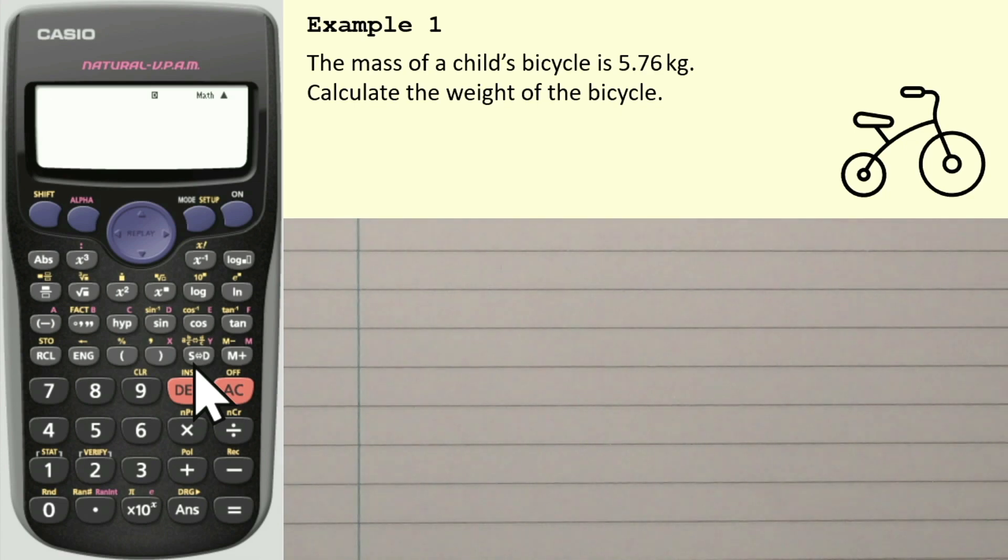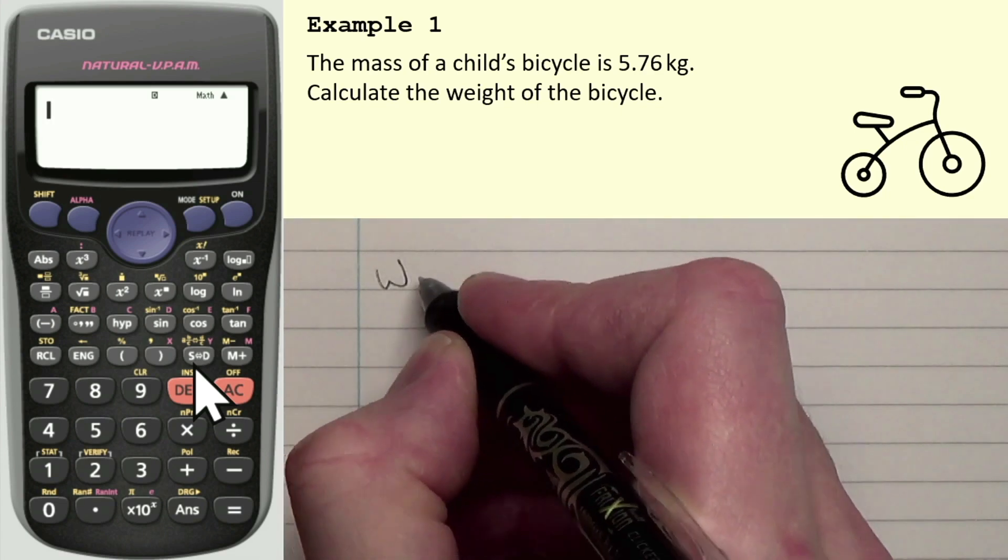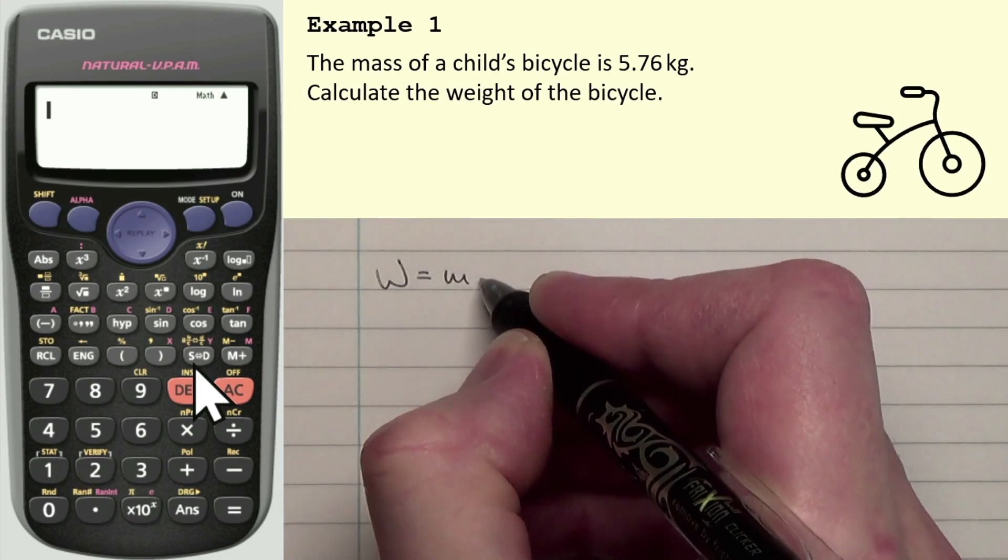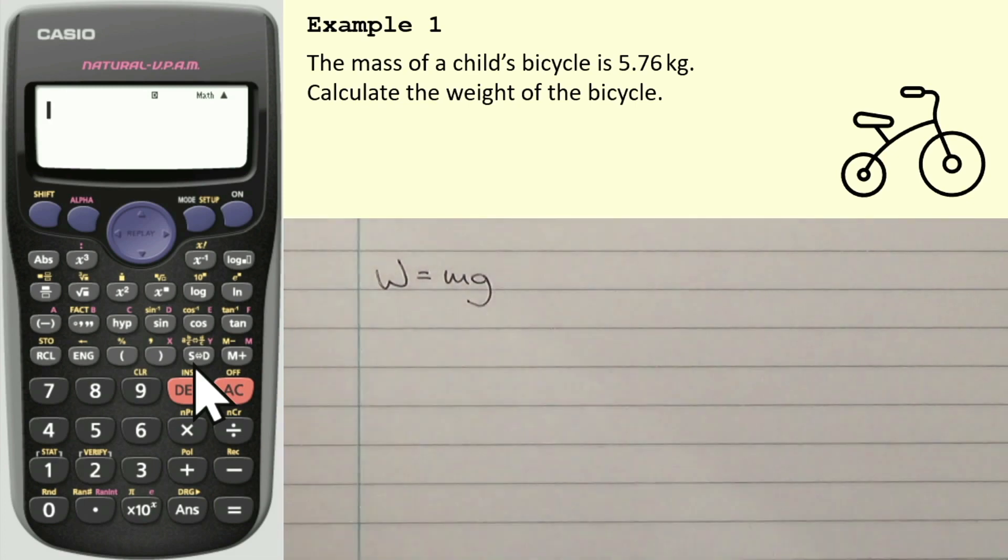And I can tell you that the equation we use for weight, W, is M, which is the mass in kilograms, times G, which is the gravitational field strength. And that's on Earth, of course. We're assuming that this bicycle is on Earth.